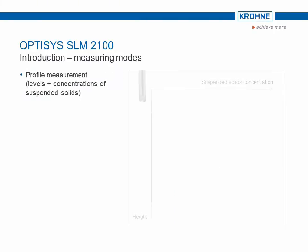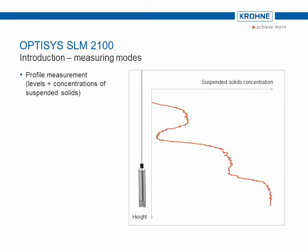Three different measuring modes can be selected. In the first mode — profile measurement — the height and concentration of suspended solids in the medium are measured continuously. The values are entered into a graph and show a precise sedimentation profile. Here, you can see the typical distribution that is often found in practice.